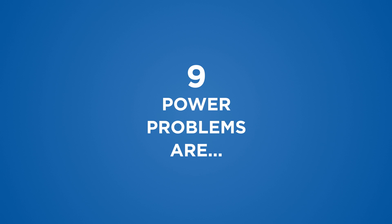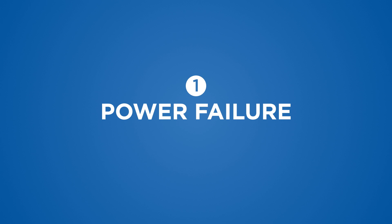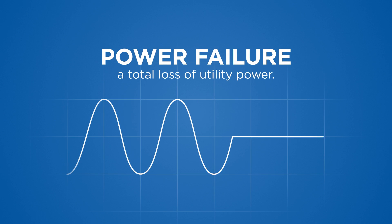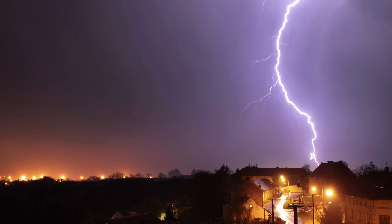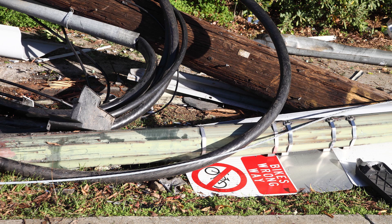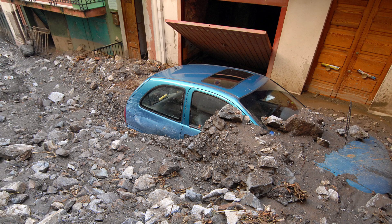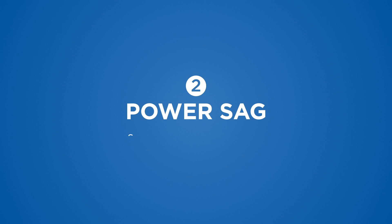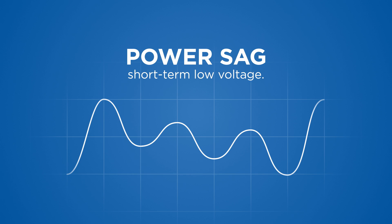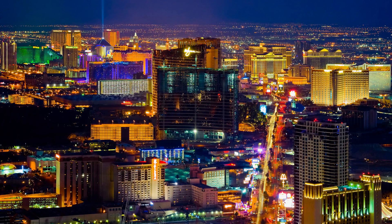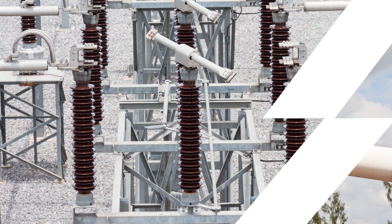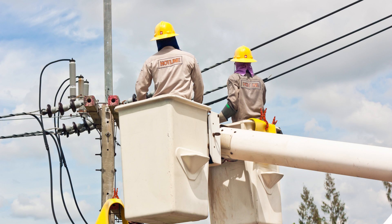The nine power problems are as follows. Power failure: a total loss of utility power. This can be caused by lightning strikes, downed power lines, grid over-demands, accidents, and natural disasters. Power sag: short-term low voltage, triggered by the startup of large loads, utility switching, utility equipment failure, lightning, and power service that's too small for the demand.